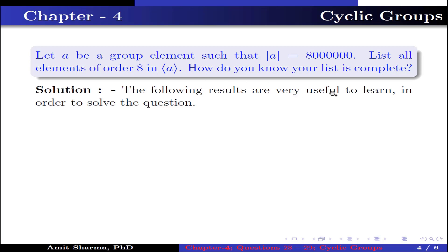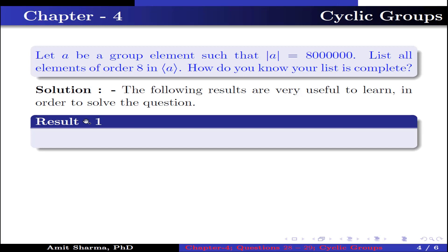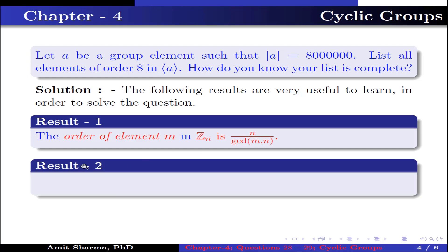The following results are very useful to learn in order to solve the question. Result number 1: the order of element m in Z_n is n divided by gcd(m, n). Result number 2: if the order of a is n, then the order of a to the power m is equal to the order of a divided by gcd(m, n).